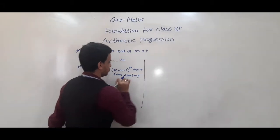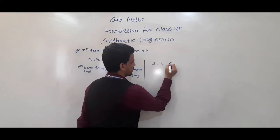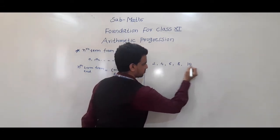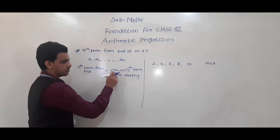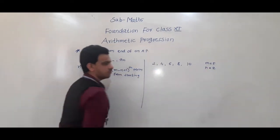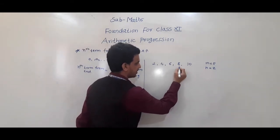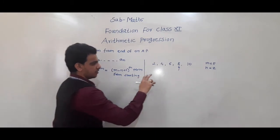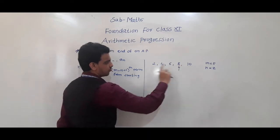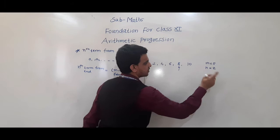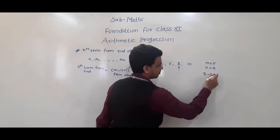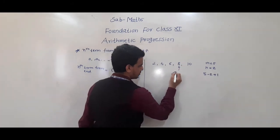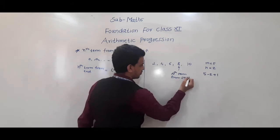For example, take 2, 4, 6, 8, 10 — these are 5 terms, so m = 5. We have to find the second term from end, so n = 2. From the list, second term from end is 8. Using the formula: m − n + 1 = 5 − 2 + 1 = 4. So 8 is the fourth term from the starting — which confirms it is the second term from end.